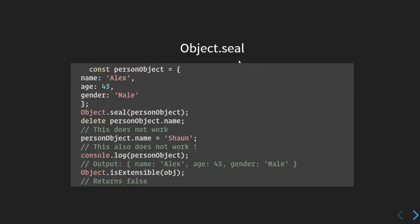Now let's discuss the seal method. Object.seal() seals an object — it prevents new properties from being added, just like Object.preventExtensions(). It also marks all existing properties as non-configurable. However, the values of present properties can still be changed as long as they are writable. In short, it prevents adding and removing properties.